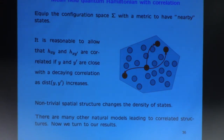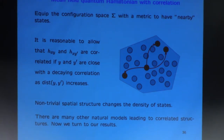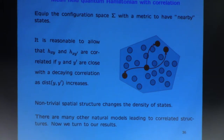The assumption that transition rates are fully independent even when the target points are close to each other is quite unphysical in reality — there are real correlations between the transition rates, and this is what our correlated model describes.